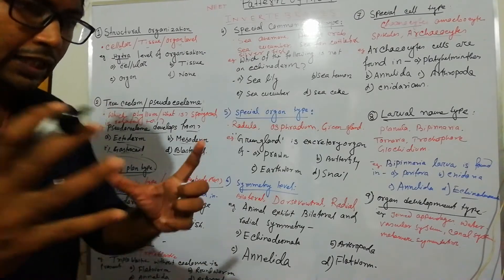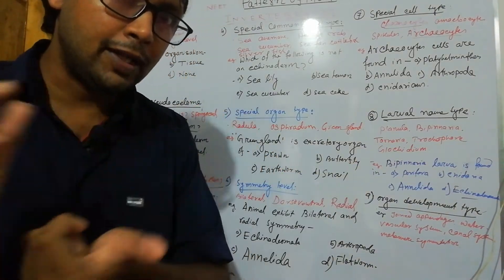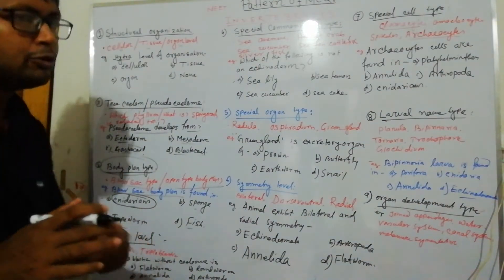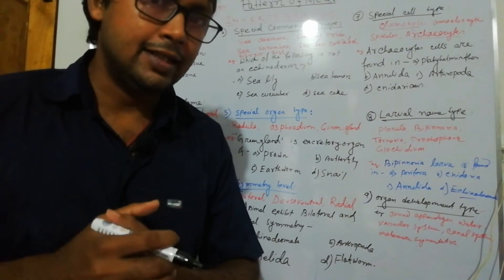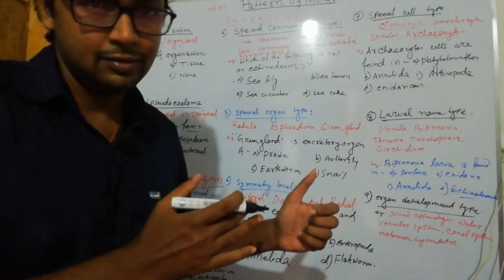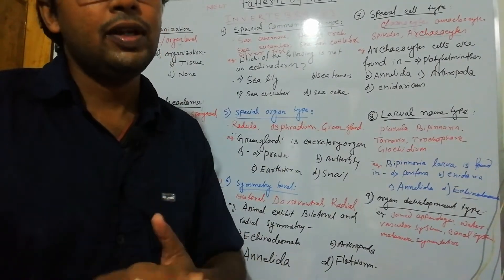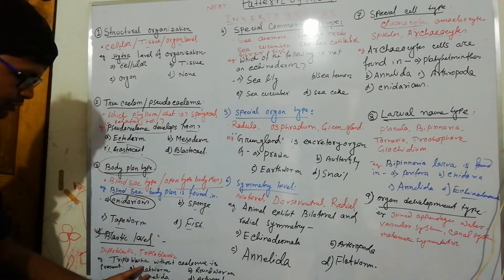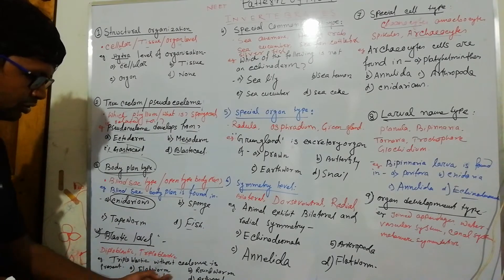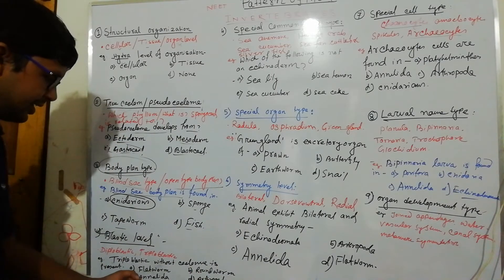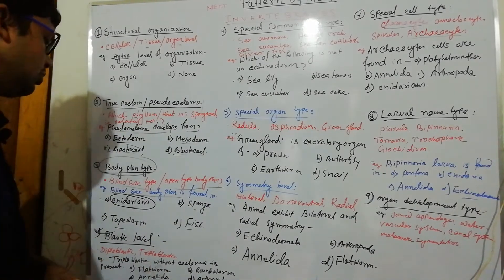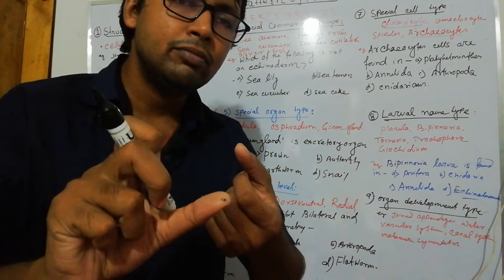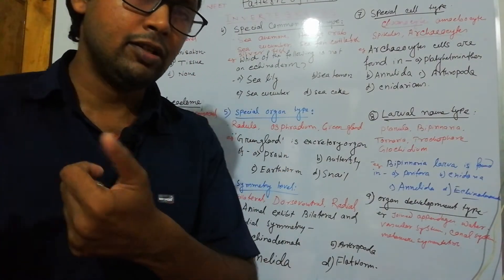A confused trait is triploblastic without coelom. Triploblastic yet without coelom — true coelom is first encountered in Annelida. So before Annelida — in porifera, cnidaria, ctenophora, platyhelminthes — there is no coelom. Flatworm is triploblastic but without any coelom. Roundworm has pseudocoelom, and Annelida has true coelom. You must remember in which phylum what blastic level is present — this is the blastic level pattern.